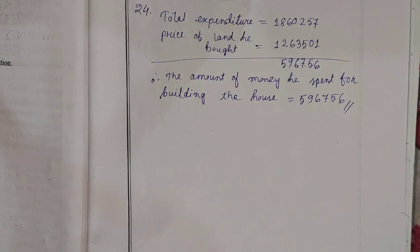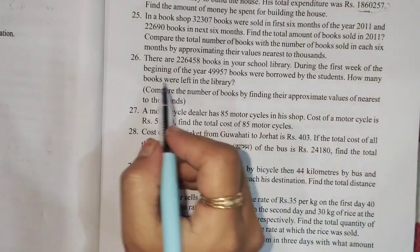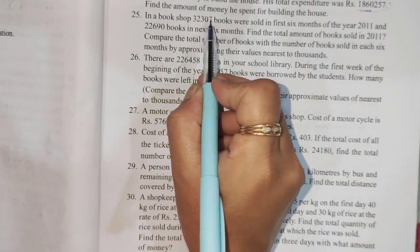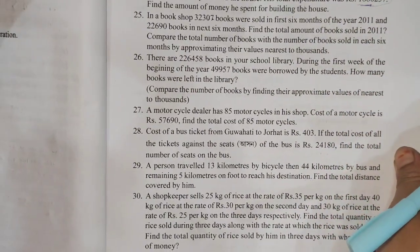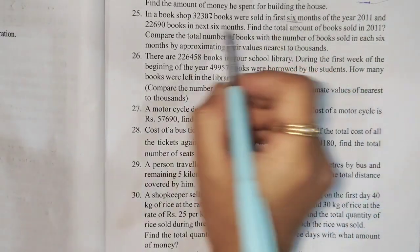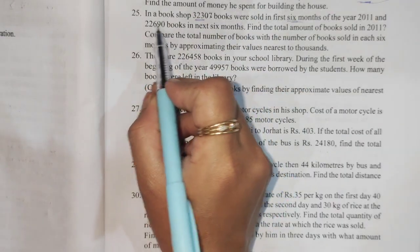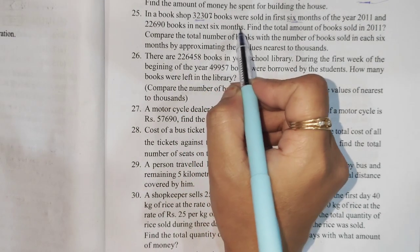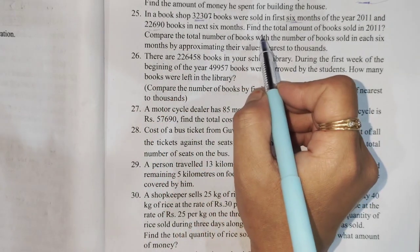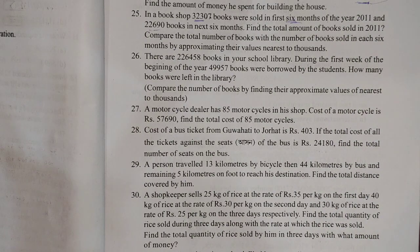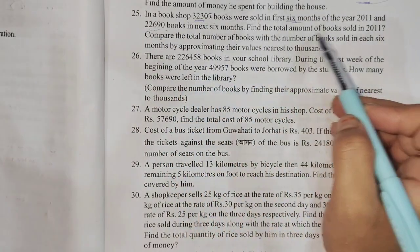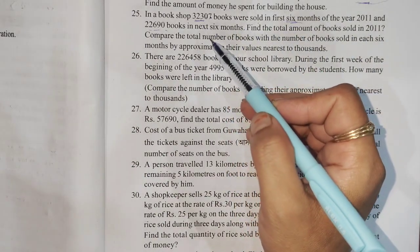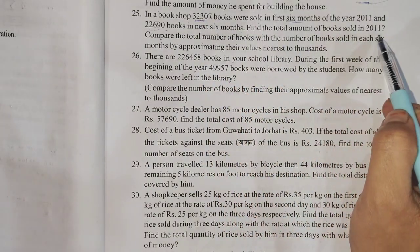How much money he spent — next question, Question number 25. 32,307 books were sold in the first 6 months of the year 2011. The book was sold in the first 6 months of the year 2011 and the last 6 months of year 2012. This is the total books sold in the year 2011.